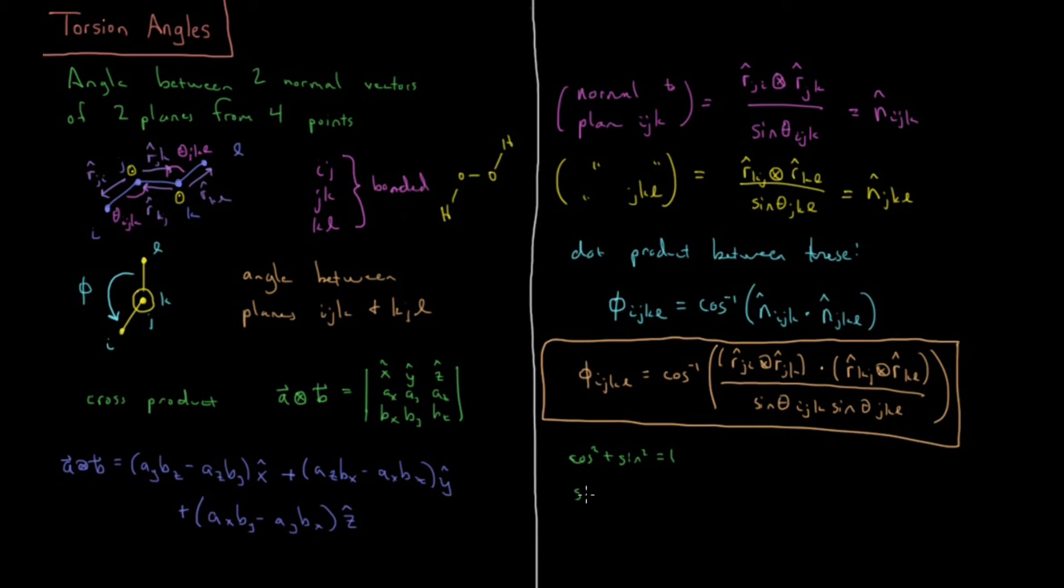So we know that sine is equal to plus or minus, you have to make the correct choice, of 1 minus cosine squared theta. So for this, for I, J and J, K, you can take the dot product of J, I, J, K, and then do 1 minus the square of that square root can give you the sine. So that's where we're going to get the sine from, and where I'm going to be computing it.